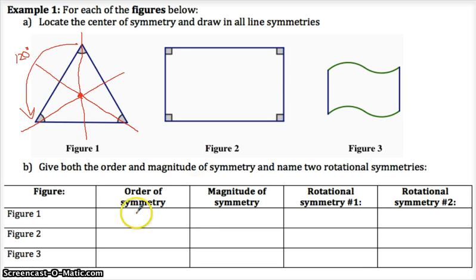This might be a center of rotation symmetry, it might not be, because the figure might not have it. This one does actually. If I rotate this point all the way to here, I would get that figure to look just like it does now. That would be 120 degrees. So figure one has order symmetry three, the magnitude is 120. Name two rotational symmetries. If I rotate around center A, 120 degrees, that works. I could also rotate around center A, negative 120 degrees, and that would work.